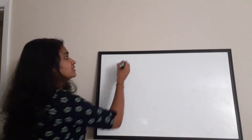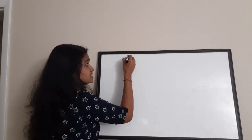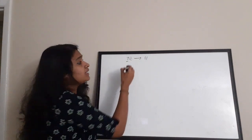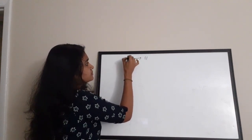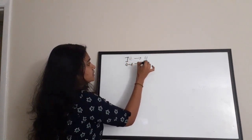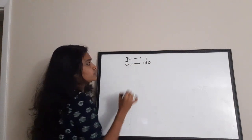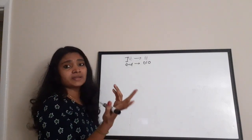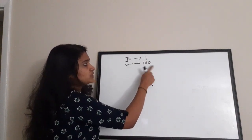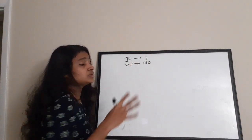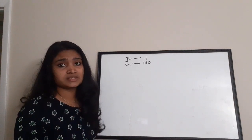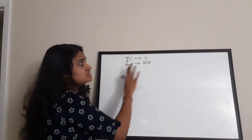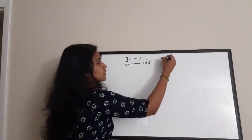The first sequence is '1 1' and the second sequence is '0 1 0'. These two sequences are non-overlapping because you cannot see '1 1' together in the second sequence. We are going to design this sequence detector using the Mealy FSM model.